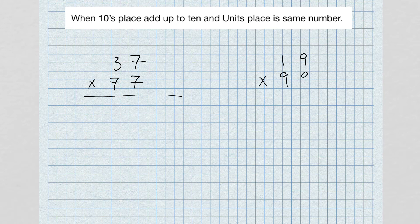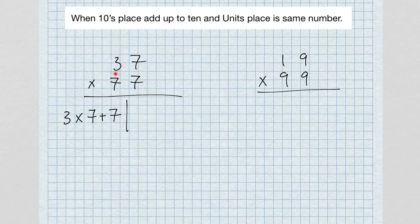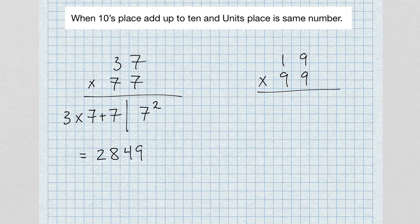As long as the tens digits add up to 10 and the units digits are the same, the trick works. Let's work on 37 times 77: left-hand side, three times seven plus seven; right-hand side, seven squared. Three times seven gives us 21; 21 plus 7 gives us 28. Seven squared is 49. Answer: 2849.